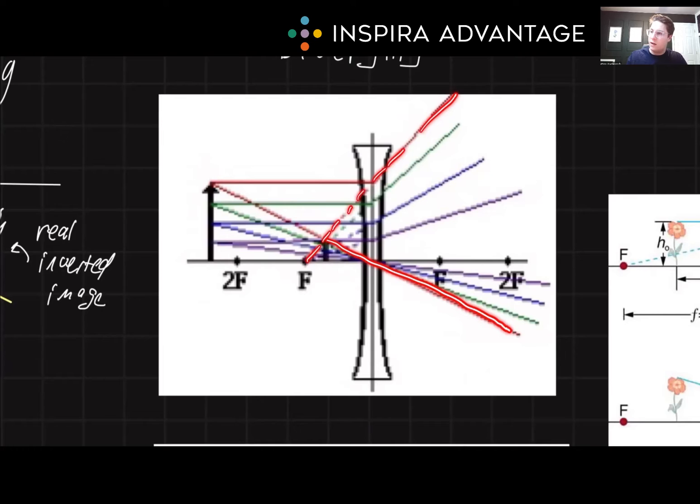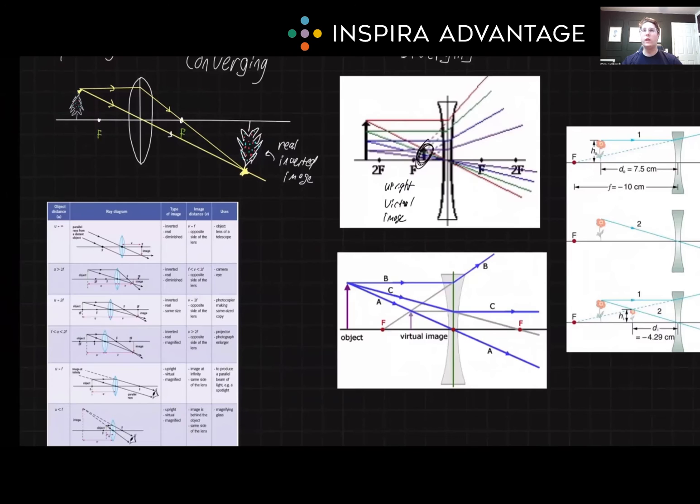But if it's not real, there's nothing on the right side. It's just this dashed line that's converging. So that means that this would be upright virtual because it doesn't exist here. Real images are inverted and can be projected onto a screen. They're formed by converging lenses when the object is outside the focal length.